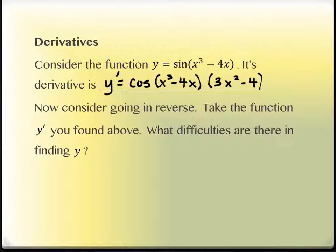So if we were going in reverse, that is, if we started with this weird cos(x³ - 4x)(3x² - 4), what difficulties would there be based on the calculus integration techniques you've seen? What about finding its antiderivative makes it hard? There's multiplication.